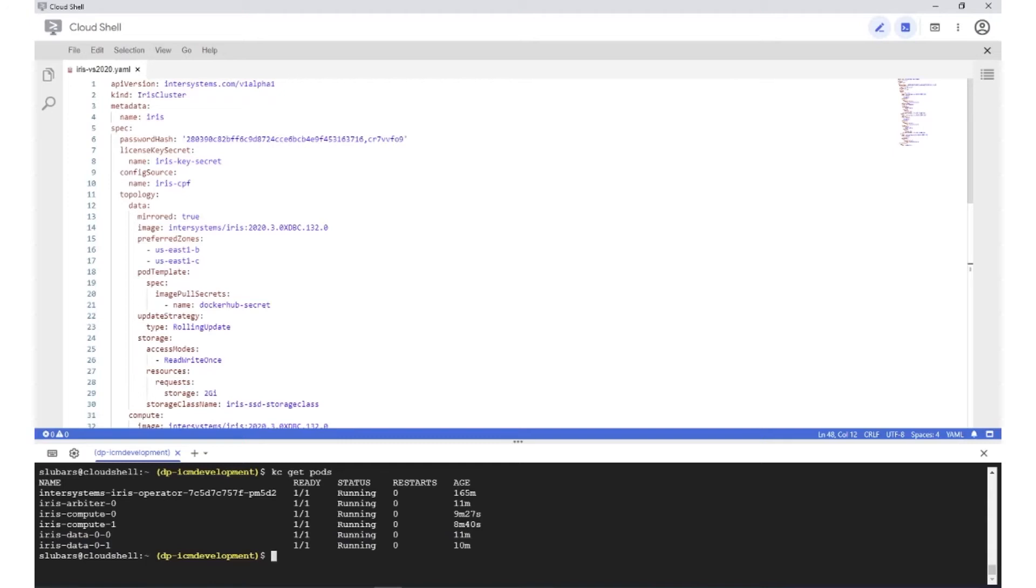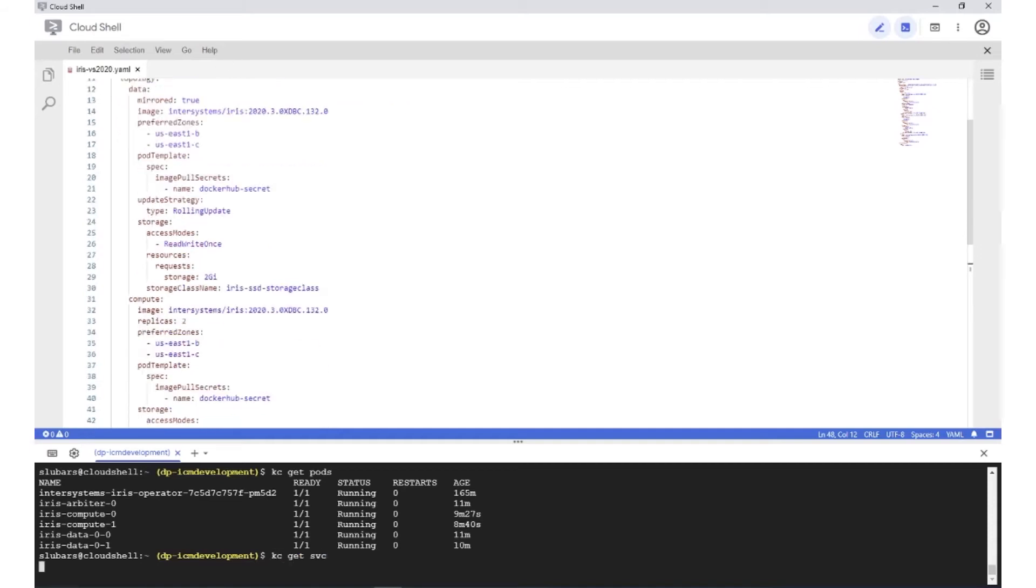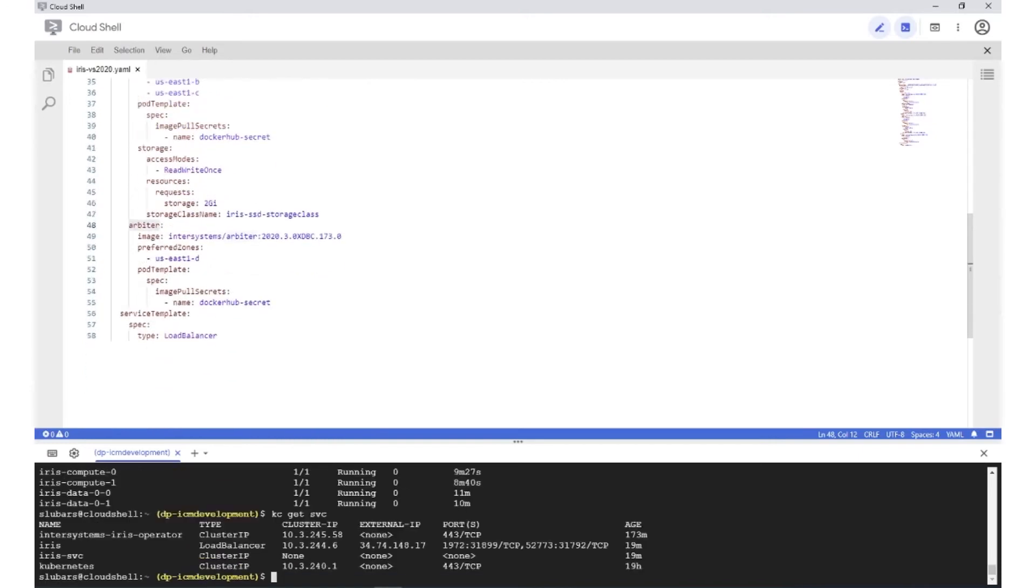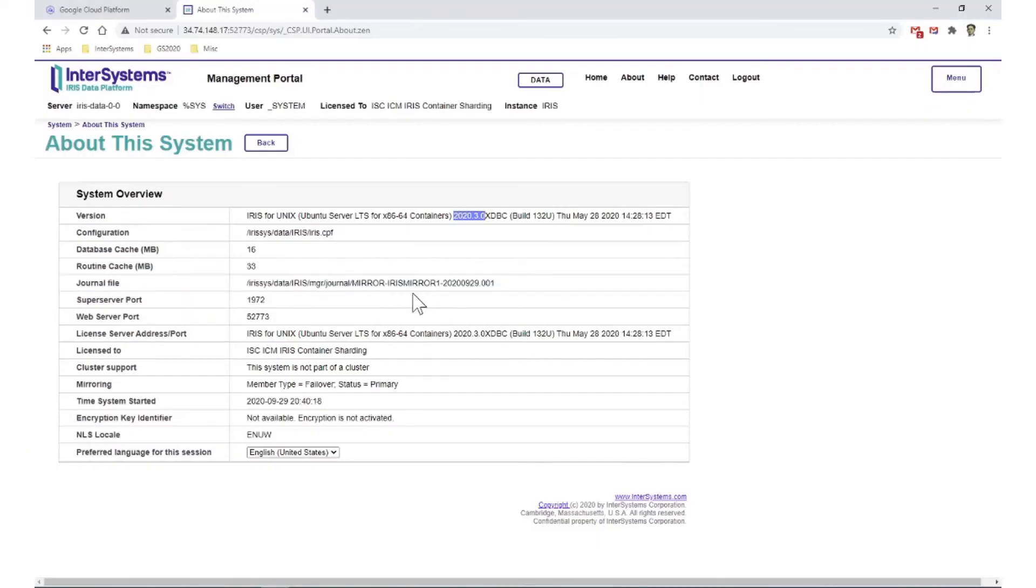So what we want to do is upgrade from 2020.3 to 2020.4. So the first question is, how do we know we're really running 2020.3? Well, one way is we can look at the management portal. This definition includes a load balancer which gives us an external IP address. And we can use this to look in the management portal here, where on the about page, we can see that we are running 2020.3.